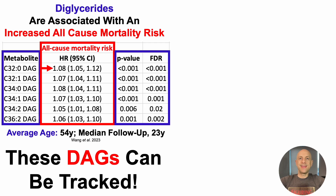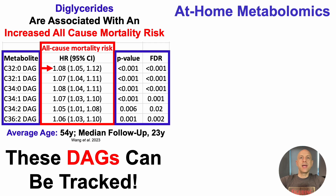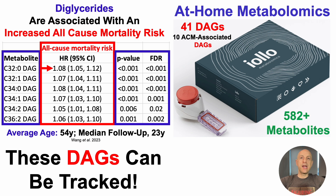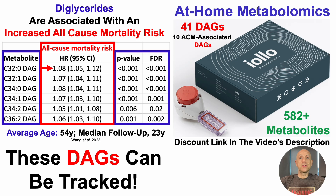The good news is that these DAGs can be tracked. I've been using at-home metabolomics with Iolo's kit, which includes 41 diglycerides and 10 all-cause mortality-associated DAGs. Besides these 41 metabolites, the kit also includes 582 others. If you want to use this kit yourself, there's a discount link in the video description. I have lots of videos on metabolomics using this kit — now 17 tests, with test number 18 on the way. Diglycerides are one of the foundational biomarker groups I'm measuring.